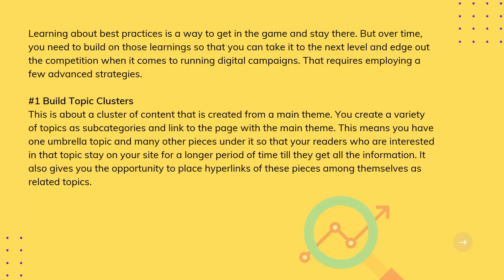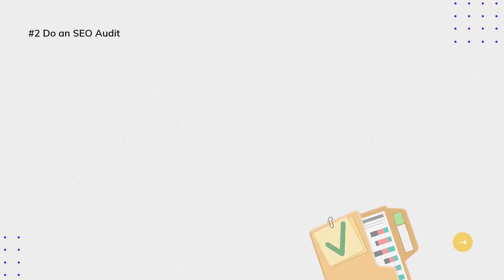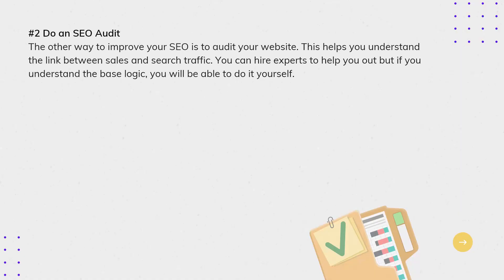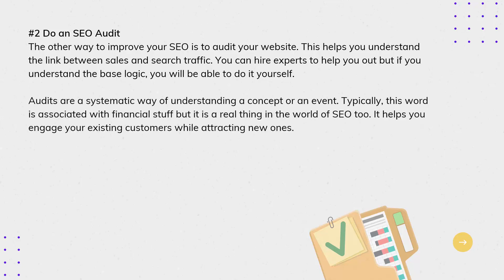Number 2: Do an SEO Audit. The other way to improve your SEO is to audit your website. This helps you understand the link between sales and search traffic. You can hire experts to help you out, but if you understand the base logic, you will be able to do it yourself. Audits are a systematic way of understanding a concept or an event.